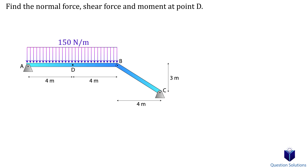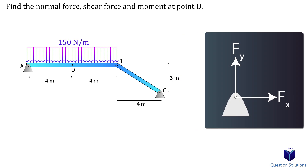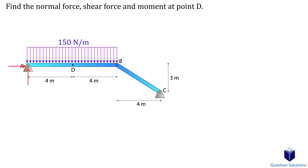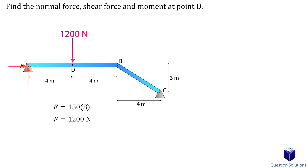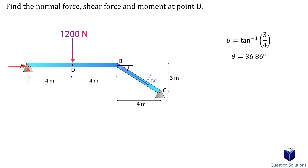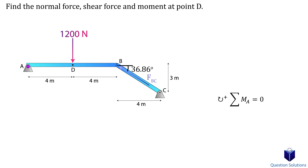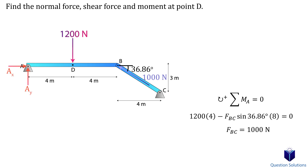Let's look at a problem where we need to find the forces at point D. Since we have a member joining here, it's easier to focus on the left side, which means we first need to figure out the reactions at pin A. We express the distributed load as a single resultant force by multiplying length by height, giving 1200 newtons, placed at the centroid at 4 meters. Considering member AB, since BC is a two-force member, its angle can be found using the inverse tangent. We figure out force BC by writing a moment equation about pin A.